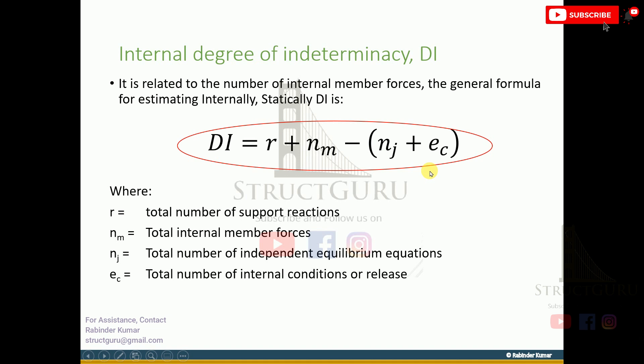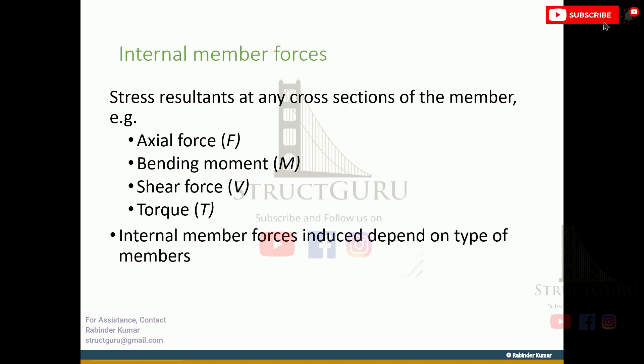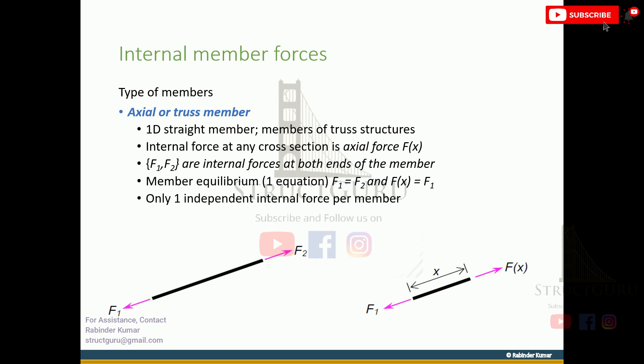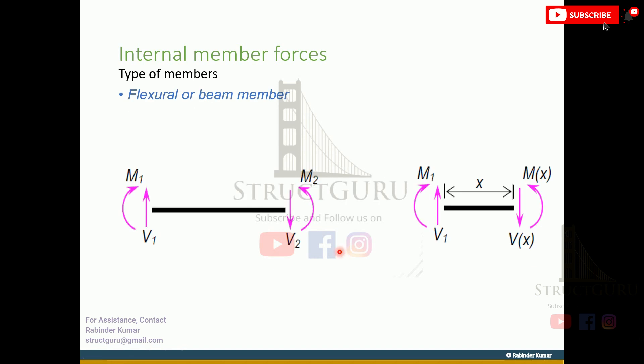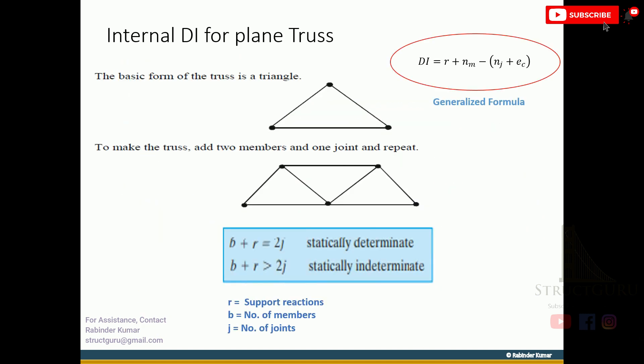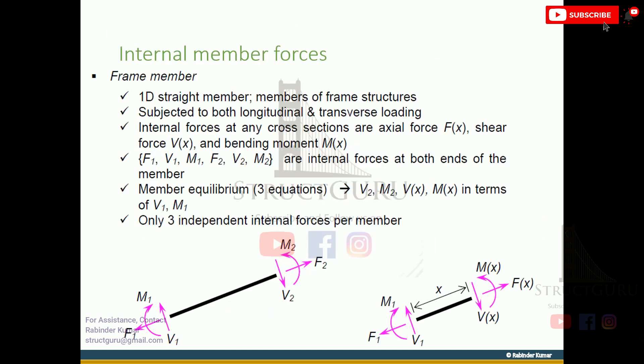Now let's discuss the internal member forces. Stress resultant at any cross-section of the member could be axial force, bending moment, shear force, and torque. For axial or thrust member we have one member force and two joint forces. For flexural members or beam members we have two member forces and two joint forces. For frame members we have three member forces and three joint forces.